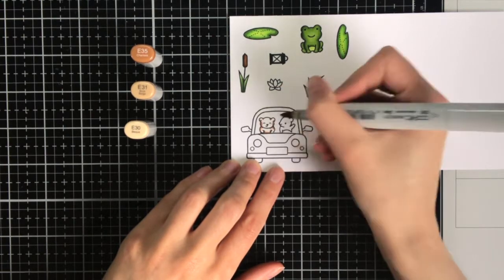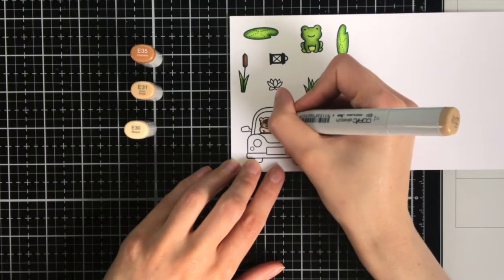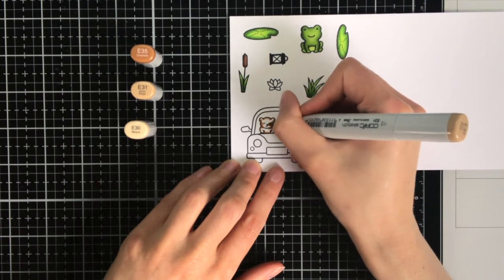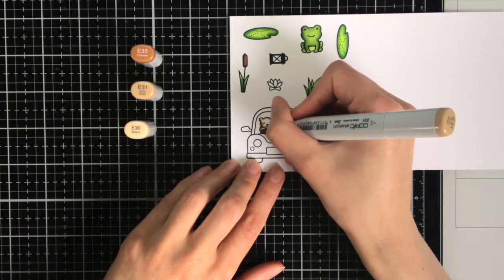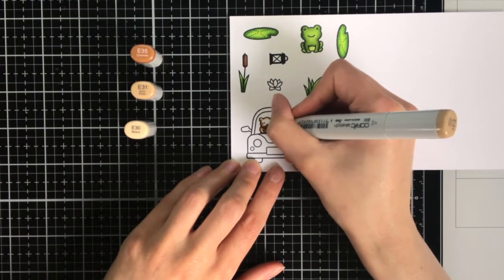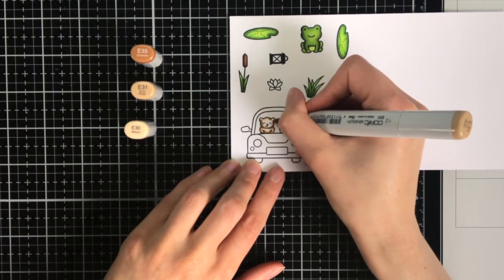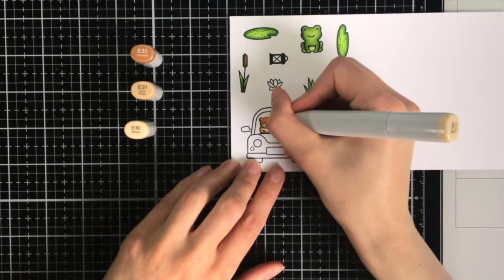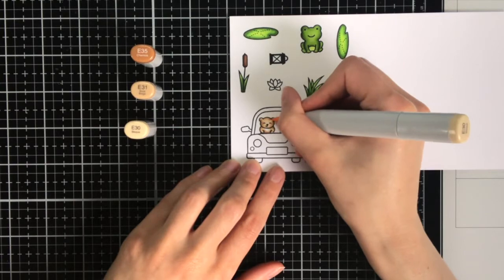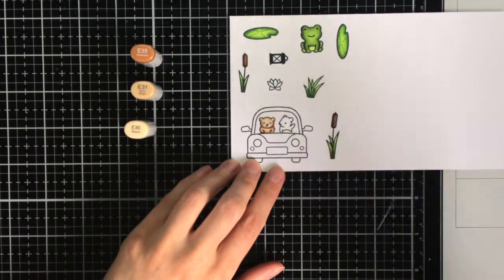For the little bears in the car I wanted to use a light brownish color, so E35, E31 and E30, and I start with the darkest color, and then I blend that out with the middle color, and then in the center I'm only using that lightest E30.